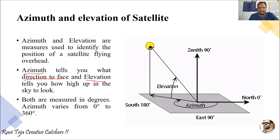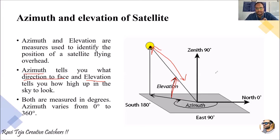Elevation tells you how high up in the sky to look. This is the elevation angle of the antenna — the angle at which it needs to be installed such that it makes good communication with the satellite. Both elevation and azimuth play an important role with respect to the inclination of an antenna relative to the earth station and the satellite.